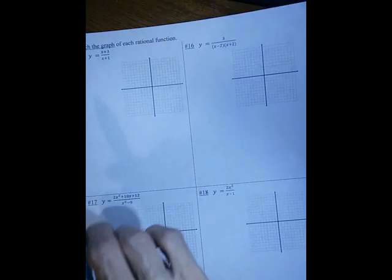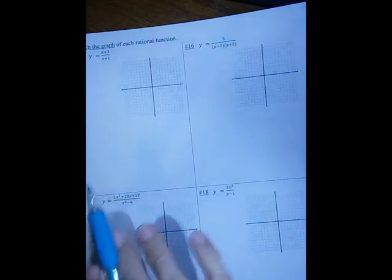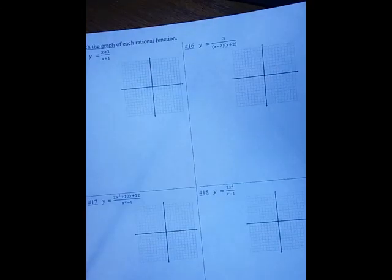Remember that you first are going to find the asymptotes and so on just like you did for the previous questions, and then you're going to pick functions on either side of the vertical asymptotes, put in the values, and sketch your graph.